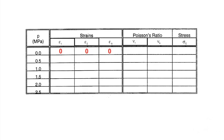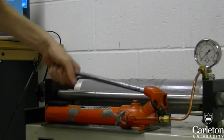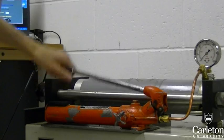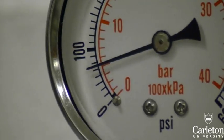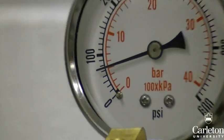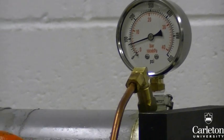Record strains at zero pressure. Start applying pressure using the pump. For the first reading, we want 0.5 megapascals, which corresponds to 5 on the gauge here, as its increments are 100 kilopascals.